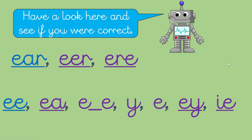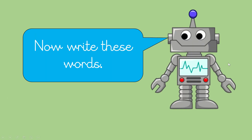Well done if you've got all of those. Now write these words. I'm going to tell you three words — if you need more time to write them, you need to pause the video. So the first one is 'sorry'. The next one is 'deer' — this is the animal, a deer, not a letter introduction. And finally, 'sphere' — we all know that shape because we've done our 3D shapes.